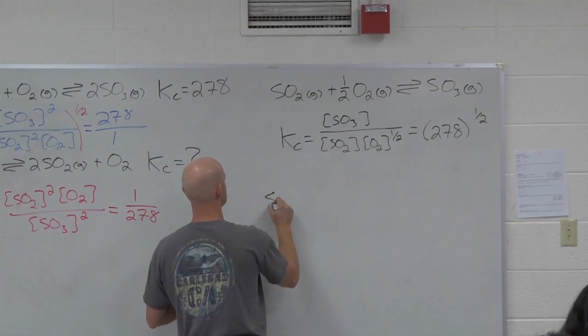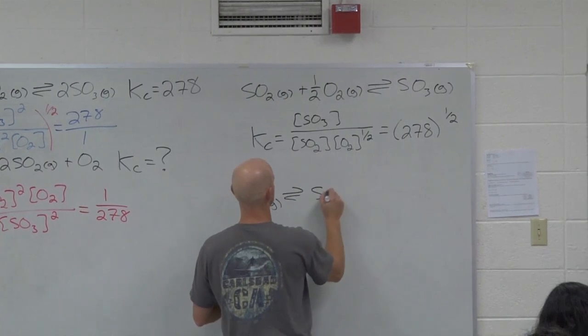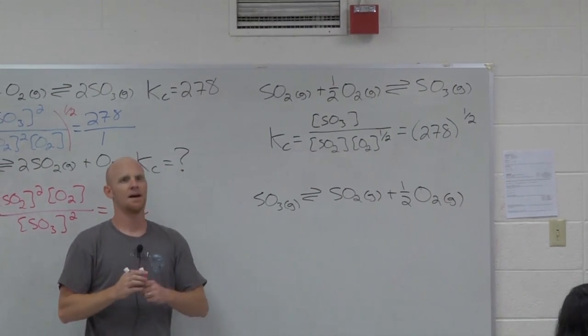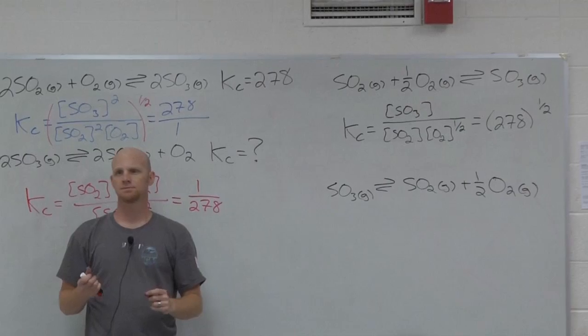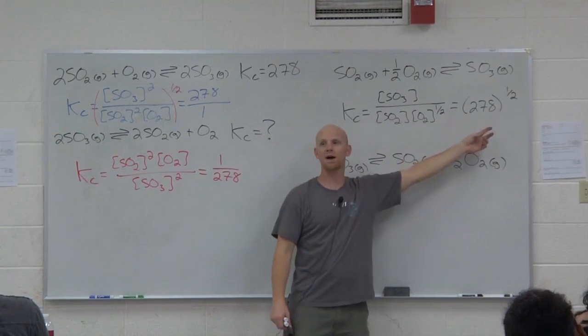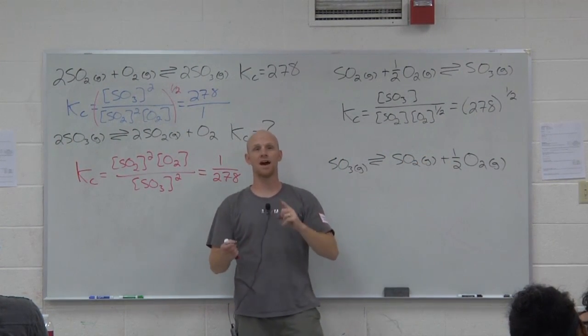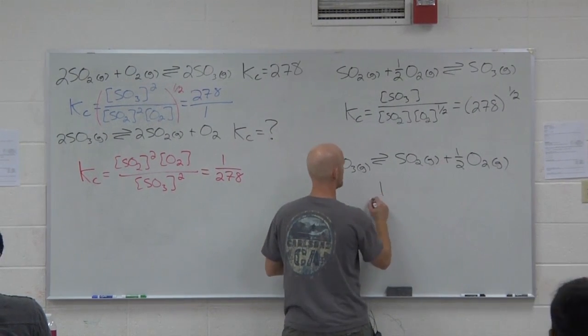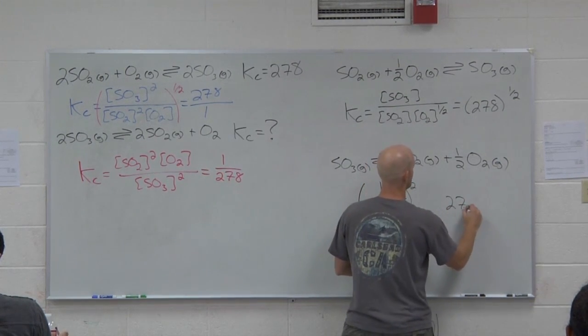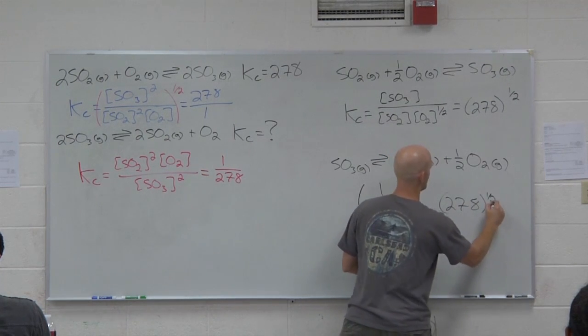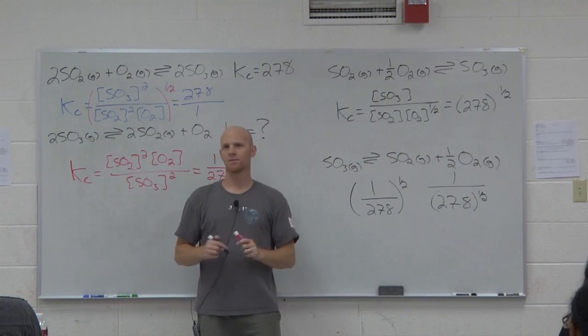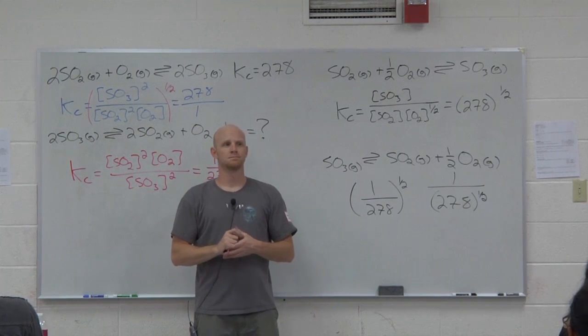So the last one here is this guy. How does this reaction relate to the original? It's reversed and cut in half. And so when we reversed a reaction, it was one over. When we cut a reaction in half, it was to the one half power or square root. Now, since it's reversed and cut in half, we got to do both. And it doesn't matter which order you do it. You can do one over 278 and then take it all to the one half power. Or you can take your 278 to the one half power and then do one over. It really doesn't matter. Take your pick. Either way, this means the same thing mathematically. It's one over the square root of 278. Cool.